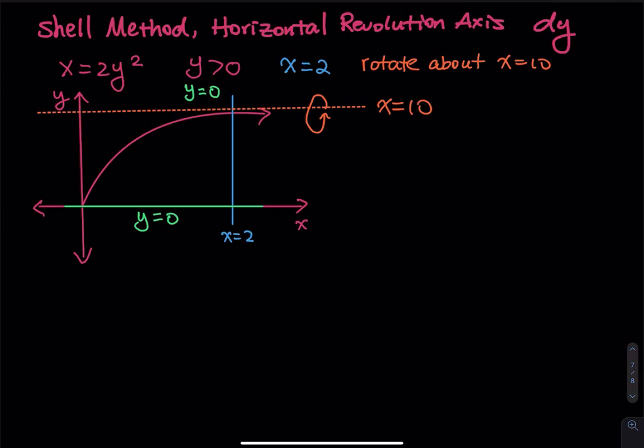In this problem, I gave you x equals 2y squared, which is a sideway parabola. Since I want y greater than 0, then you don't need to worry about the piece that is below the x-axis.